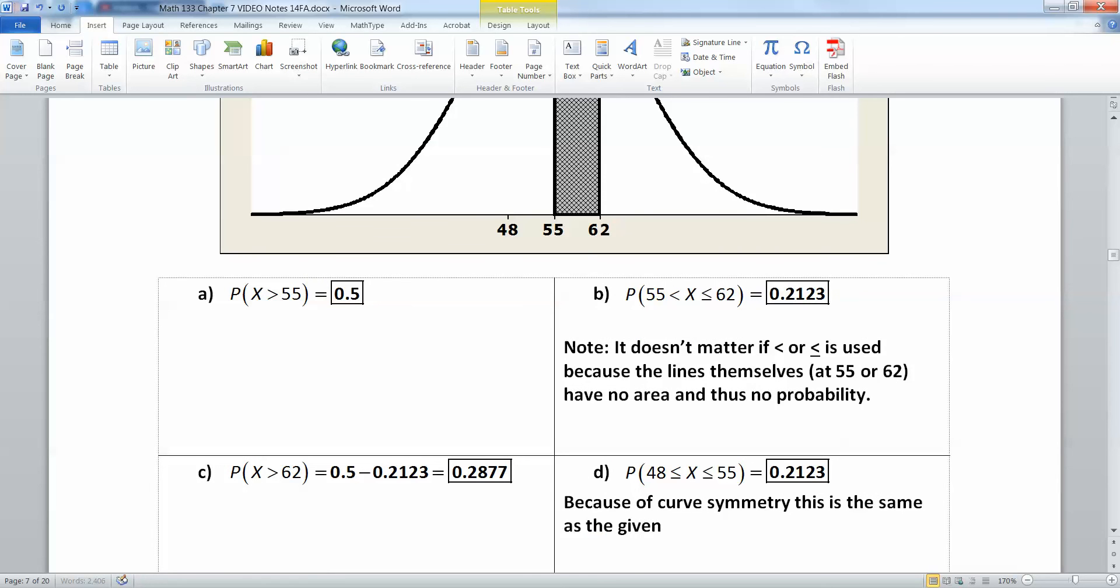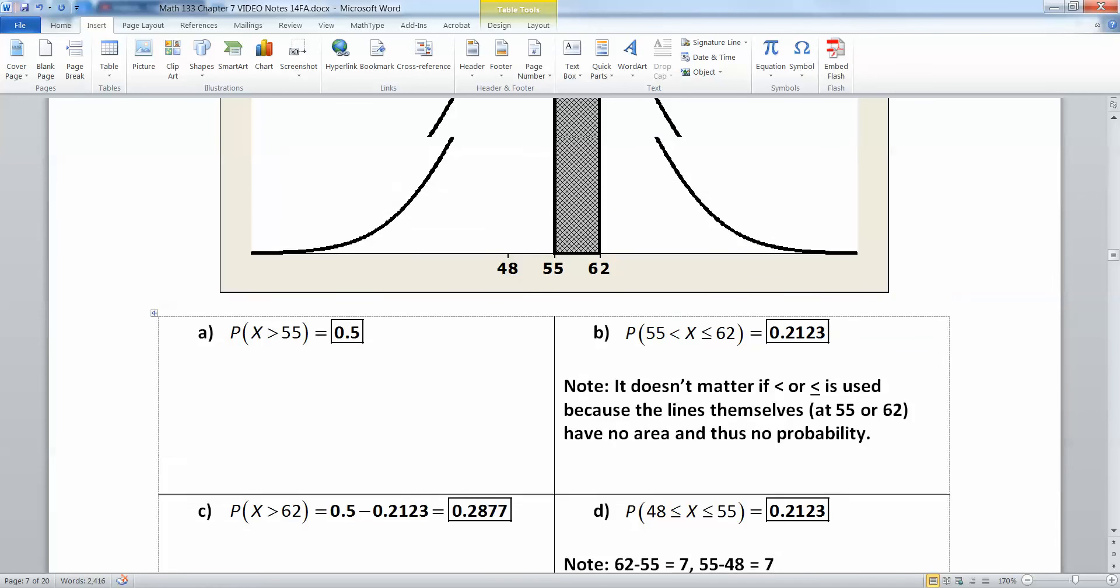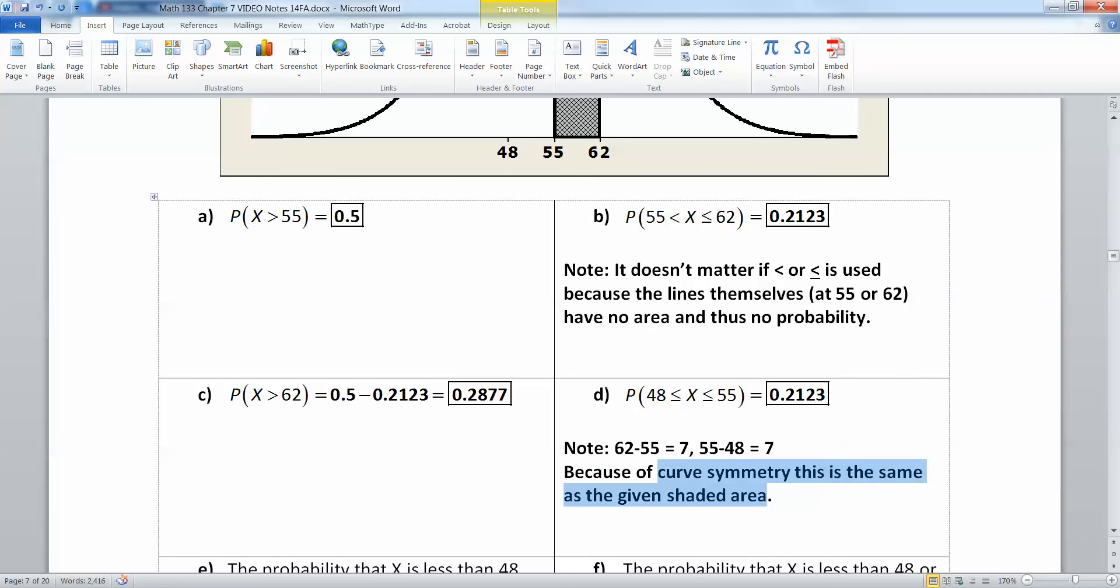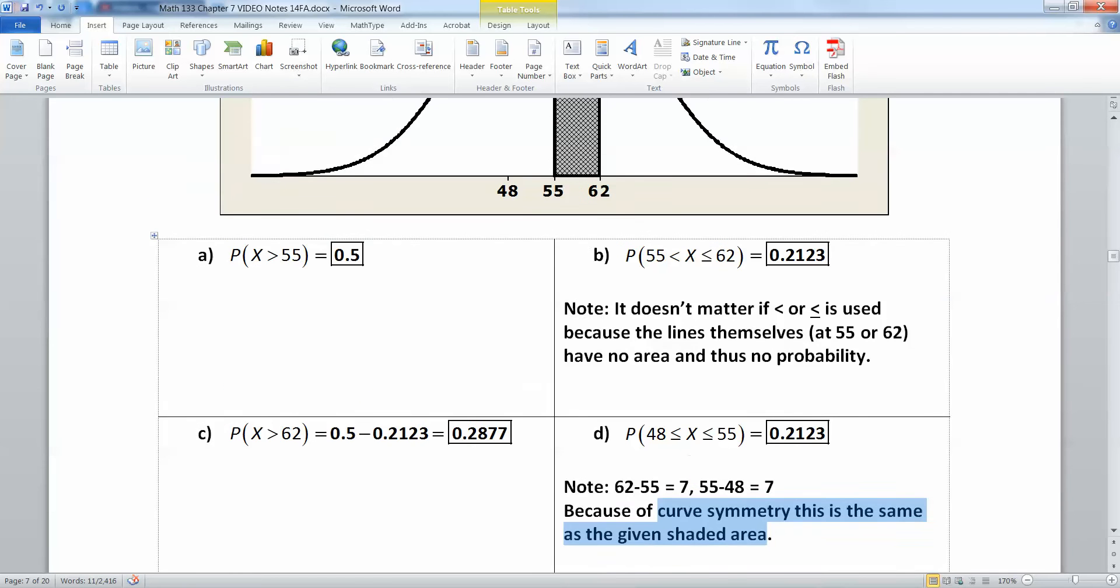You're just using a little bit of geometry to kind of figure this out. It might help if you noticed: 62 take away 55 is 7, and then 55 take away 48 is 7. They're the same distance away and that's why the symmetry argument works.